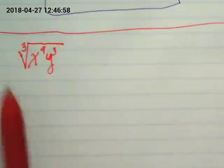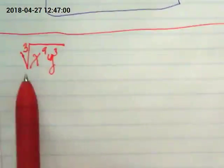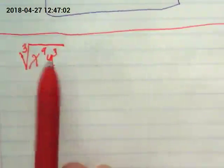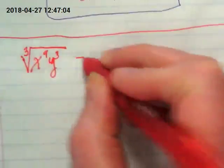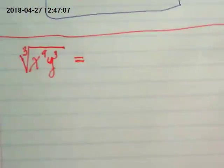I've got a cube root of x to the ninth and y to the third. Knowing what you guys now know about how these work, what can that be simplified to?